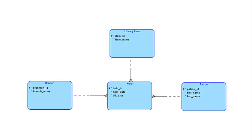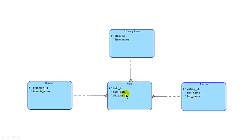And your diagram is going to look like this. Notice that I have given hold its own primary key. I'm not using key migration for its primary key — it's got its own primary key. And therefore, we are not using key migration here.